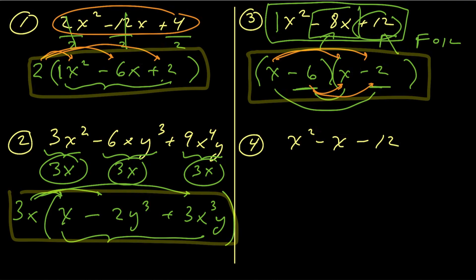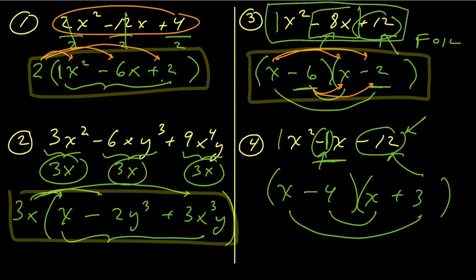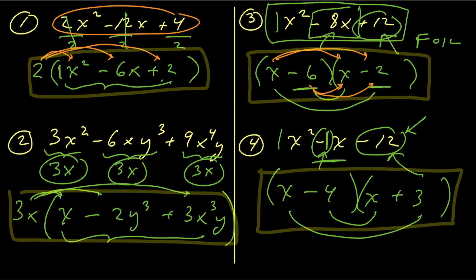For number 4, we again have a trinomial with leading coefficient 1. We ask: what two numbers multiply to negative 12 but add to negative 1? Note that a negative x is the same as negative 1x. The answer is negative 4 and positive 3: negative 4 times positive 3 gives negative 12, and negative 4x plus positive 3x adds to negative 1x. Can we factor further? No — that's our final result.